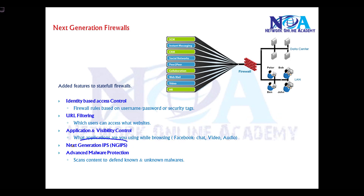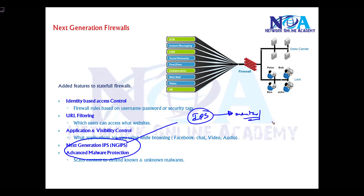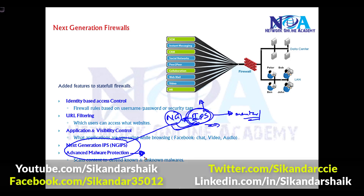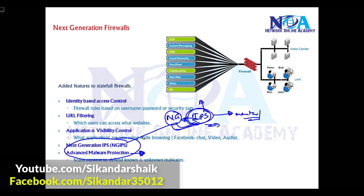Most next generation firewalls also support next generation IPS — Intrusion Prevention System. IPS is a special device in the network that detects, monitors, and analyzes traffic, and if it finds any vulnerabilities or threats, it initiates an action. Most IPS solutions used today are next generation IPS because they support advanced malware protection and other benefits that previous IPS systems did not, including next generation intrusion prevention with many additional features.